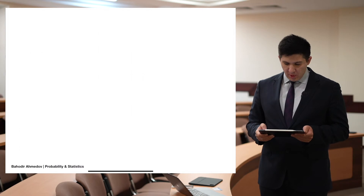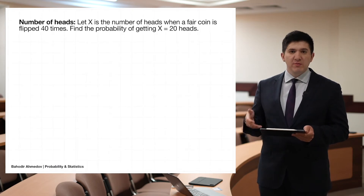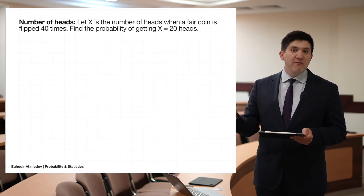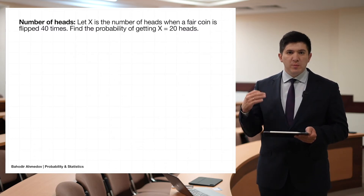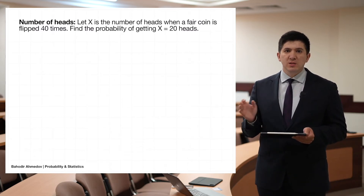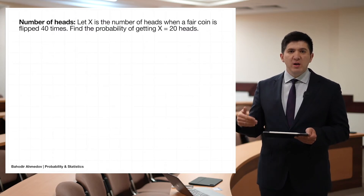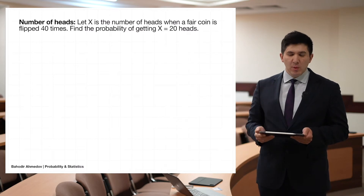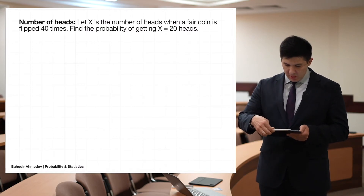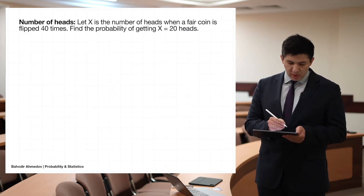Let's start with a problem: we are going to flip a fair coin 40 times. The probability of heads or tails is equal to 1/2, and we need to find the probability of obtaining 20 heads. This is a binomial distribution problem.